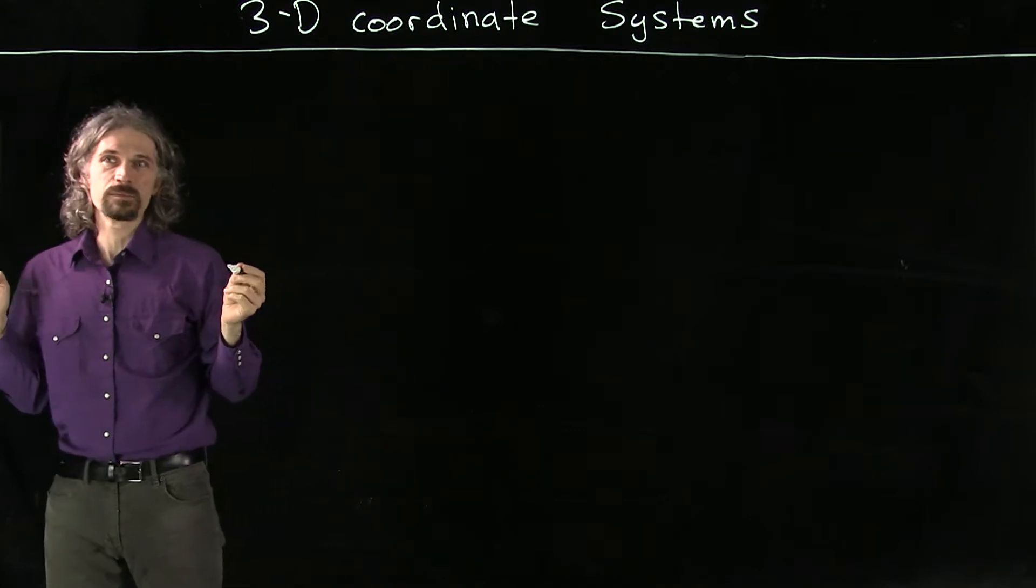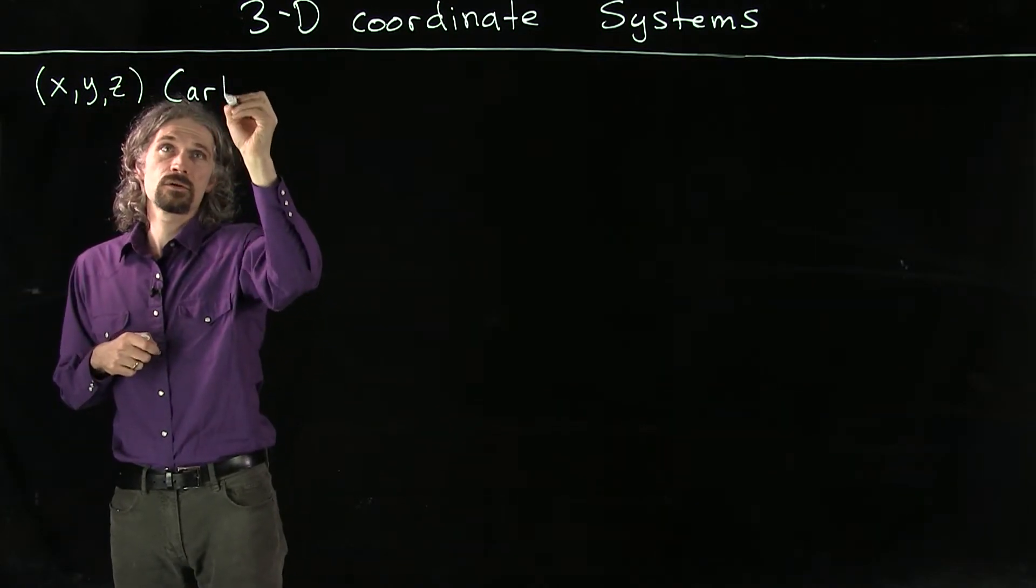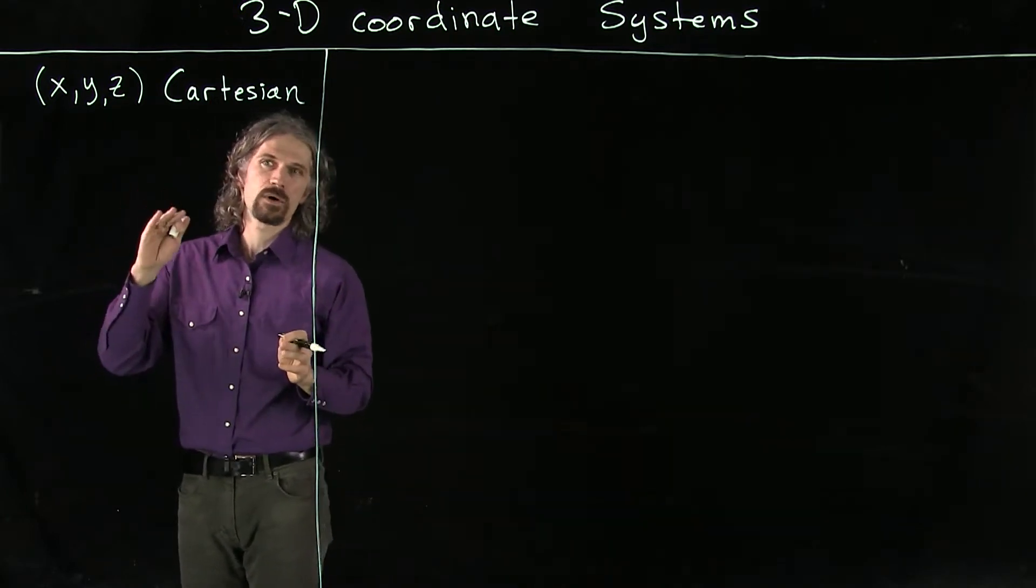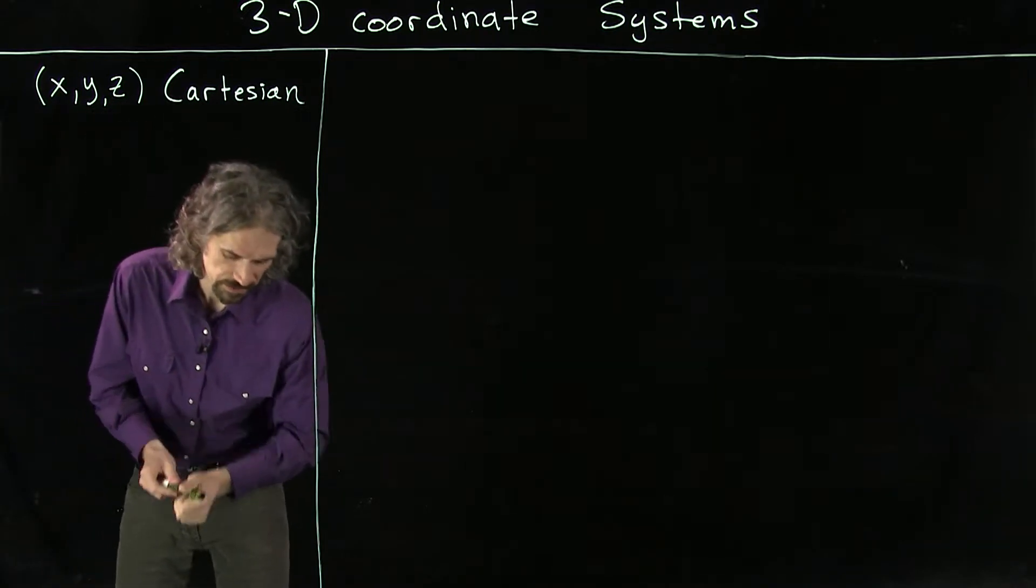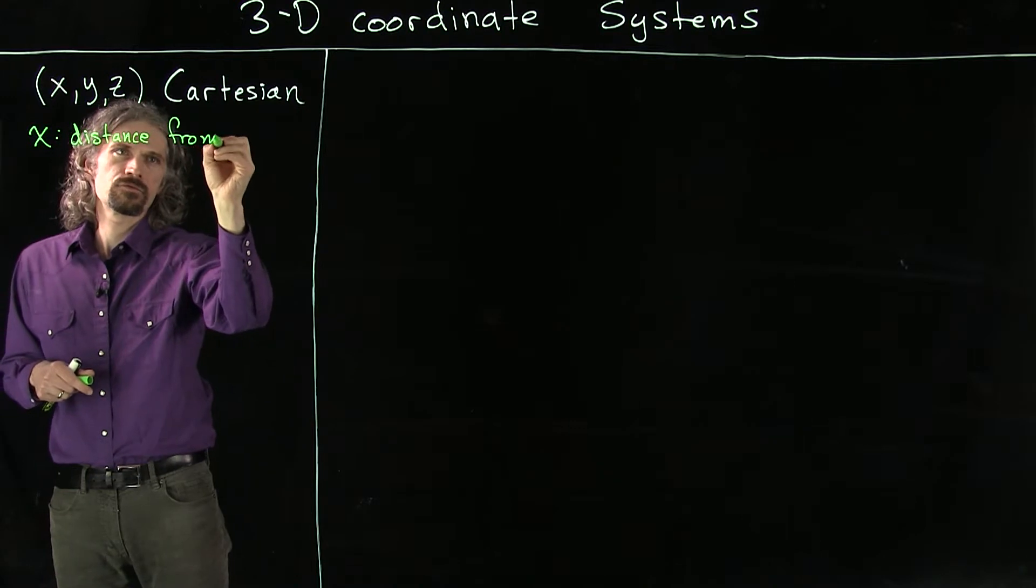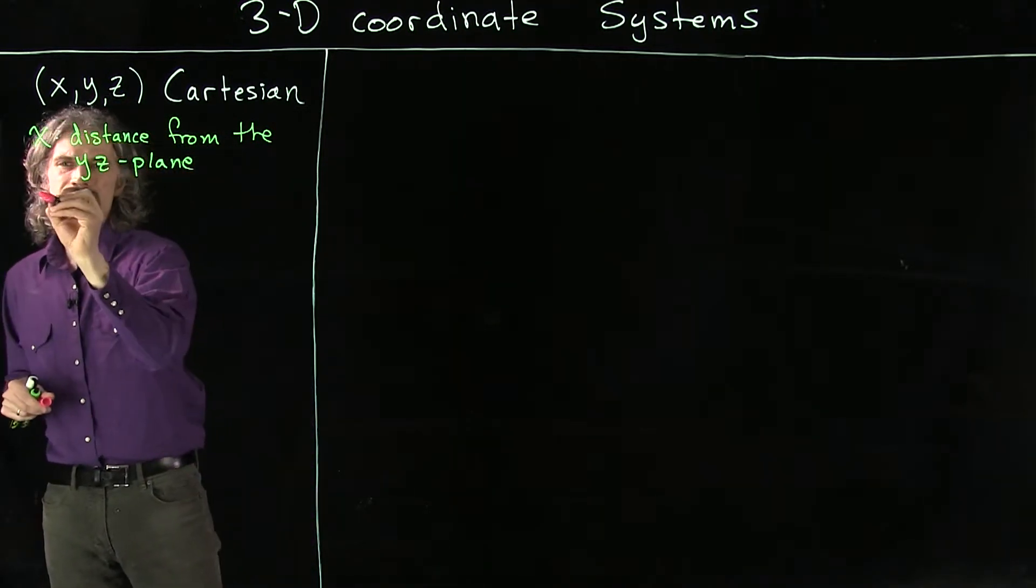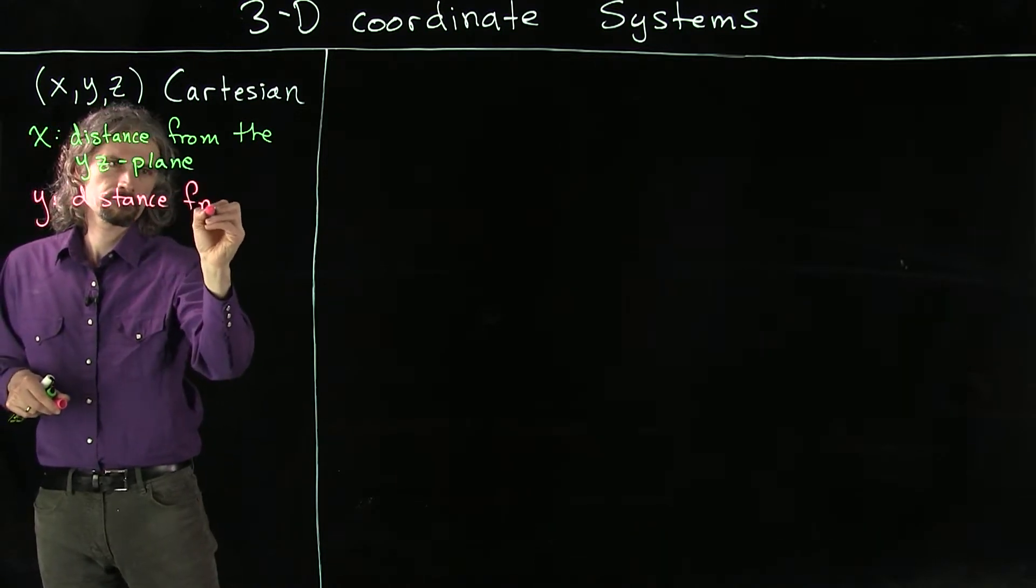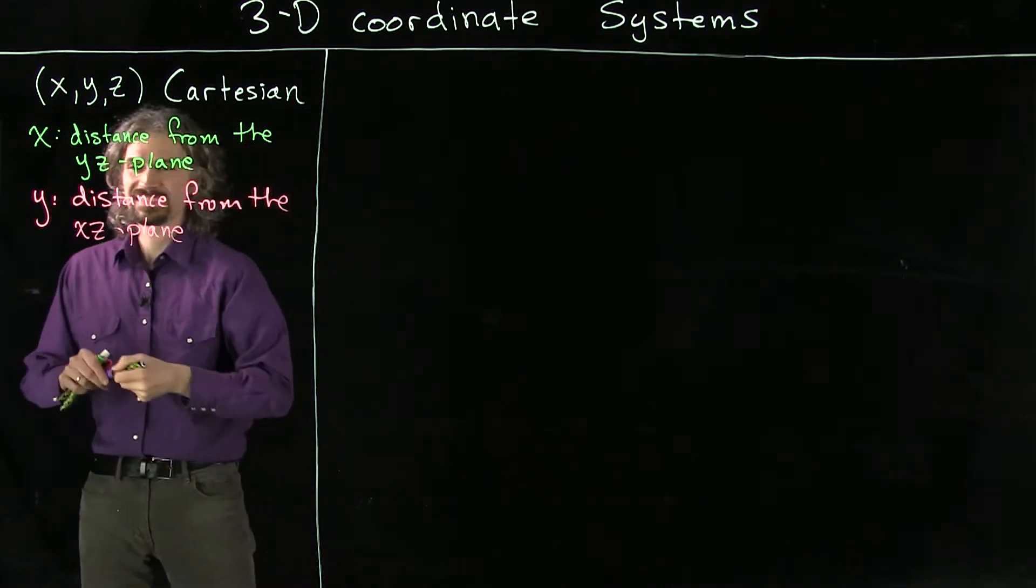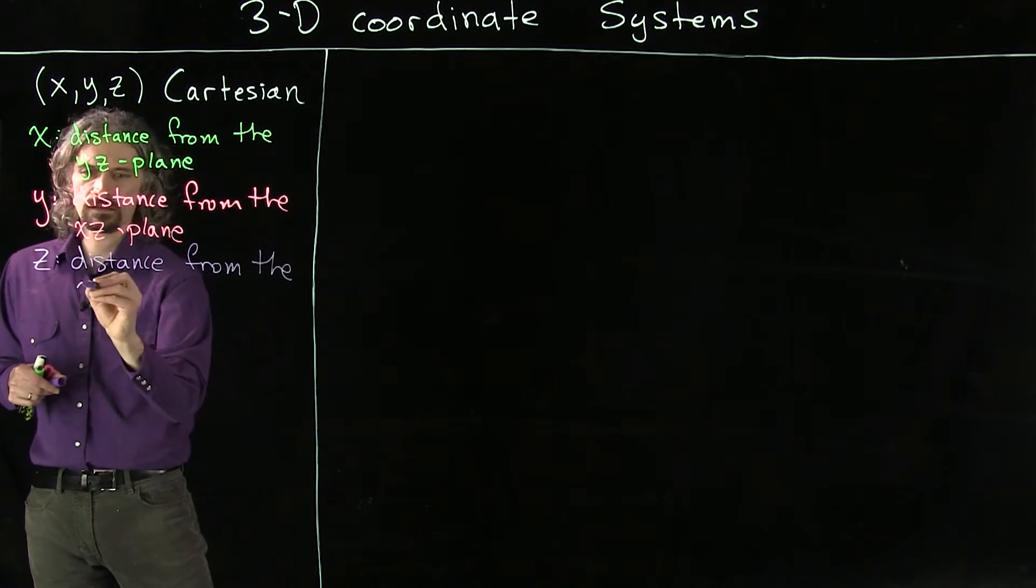So what are we going to start with? We're going to start with what I think we're probably the most familiar with, which are x, y, z coordinates. These are called Cartesian or sometimes rectangular coordinates. So let's think about what x, y, and z are. X is the distance from the yz plane. Y is the distance from the xz plane. And z is the distance from the xy plane.